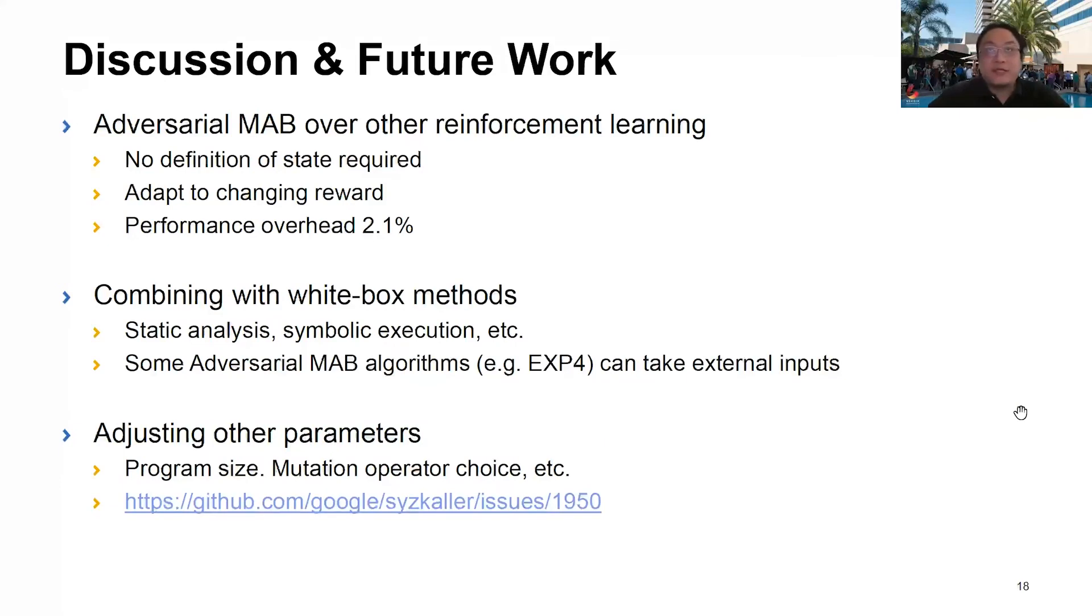So, we demonstrate that adversarial MAB works very well in kernel fuzzing. Despite not having a state definition that other more advanced reinforcement learning algorithms have, it can still adapt to the changing rewards very quickly and has a very low performance overhead, which we measure at 2.1%. MAB assumes that the gambler does not know the internals of the slot machines, but that's not necessarily the case in kernel fuzzing. We can surely use some methods like static analysis, symbolic execution, to know the inner workings of the OS kernel. It will be an interesting future direction to combine MAB with these white-box methods.